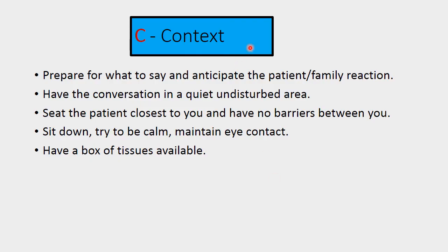C — Context: prepare for what you say and anticipate the patient or family reactions. Have the conversation in a quiet, undisturbed area. Choose a suitable place for discussion. Seat the patient closest to you, have no barriers, sit down, try to be calm, maintain eye contact, and have a box of tissues available.